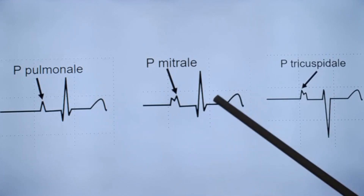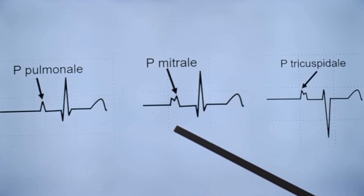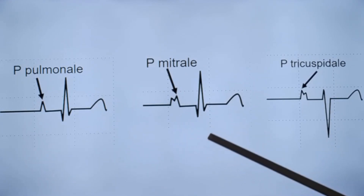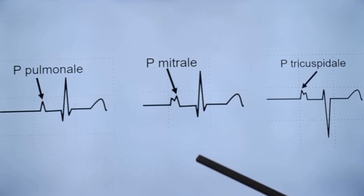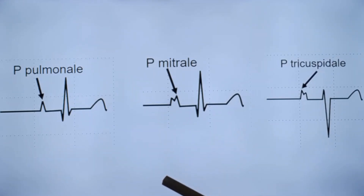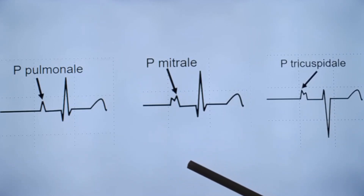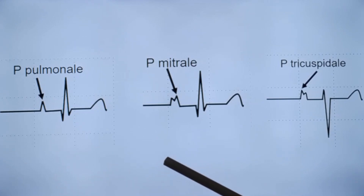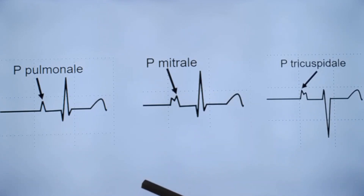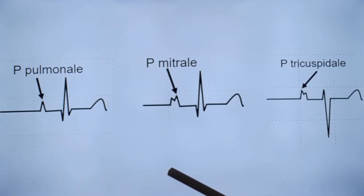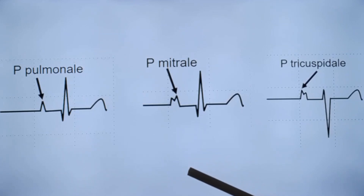In V1, P mitral shows a small initial positive component followed by a prominent negative component, indicating left atrial overload. In P pulmonale or right atrial overload, a prominent positive component is seen in V1. In biatrial overload, both features are present: a tall as well as wide P wave, with an initial peaked component and a broad negative second component in V1.